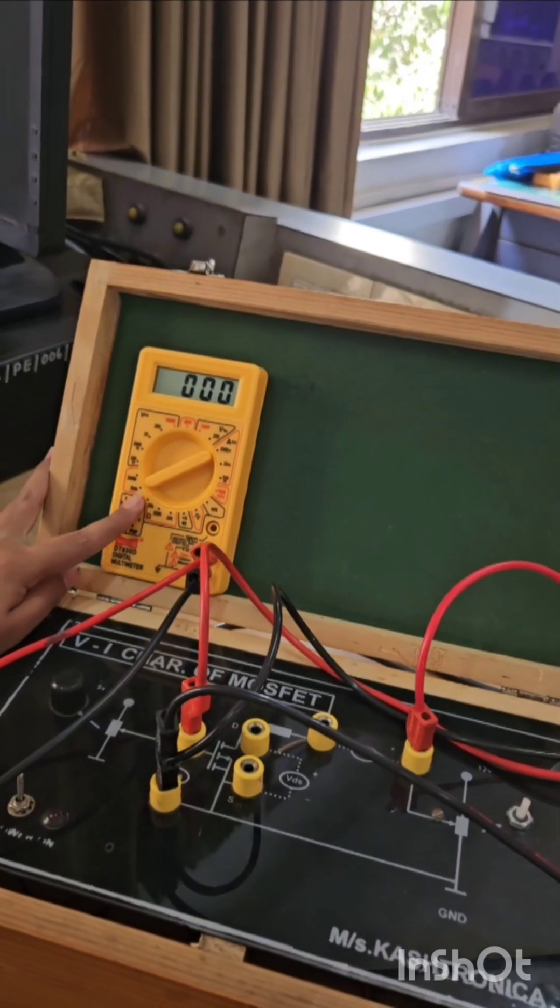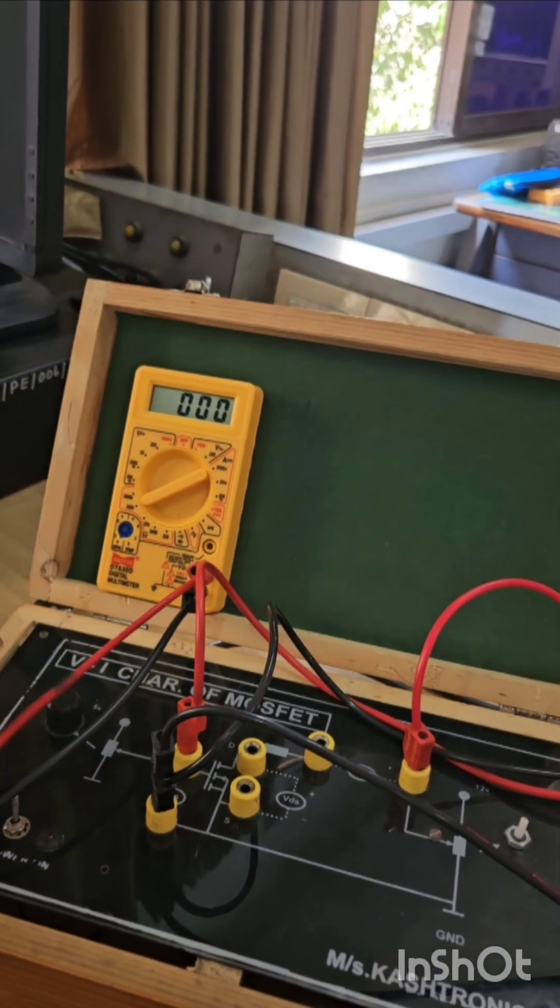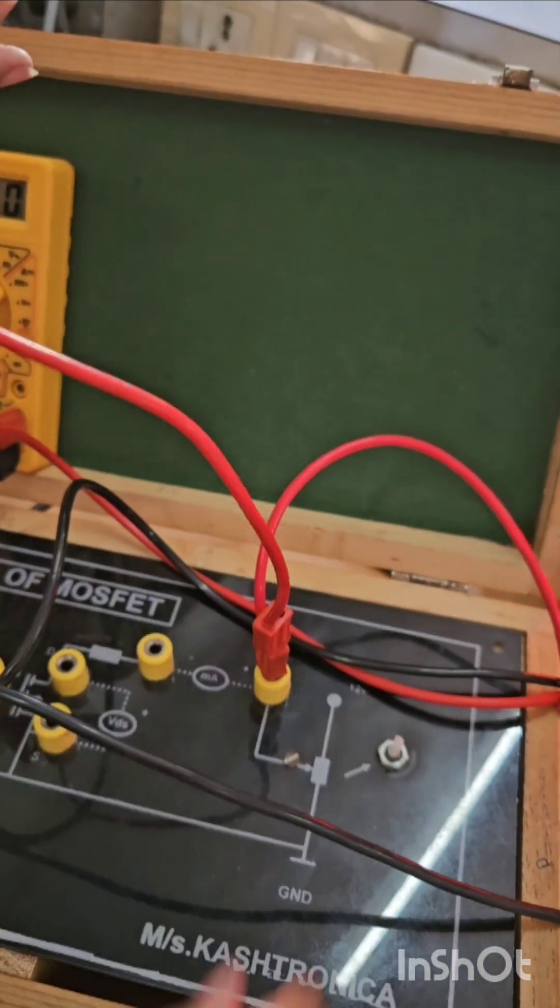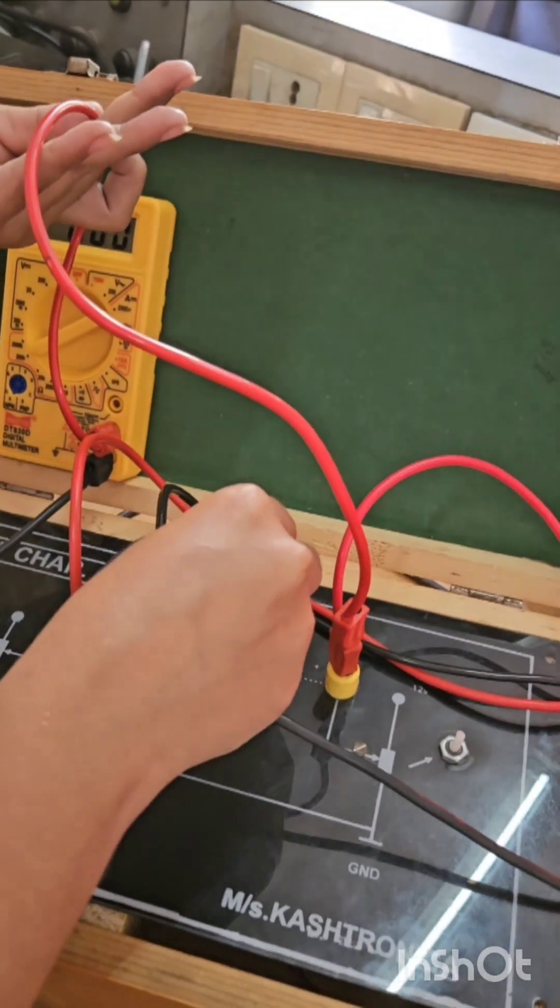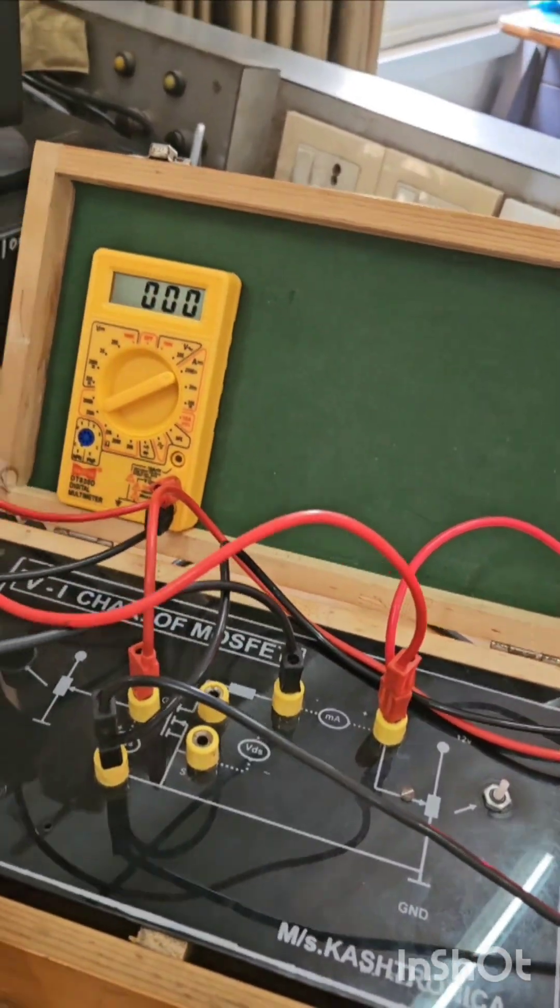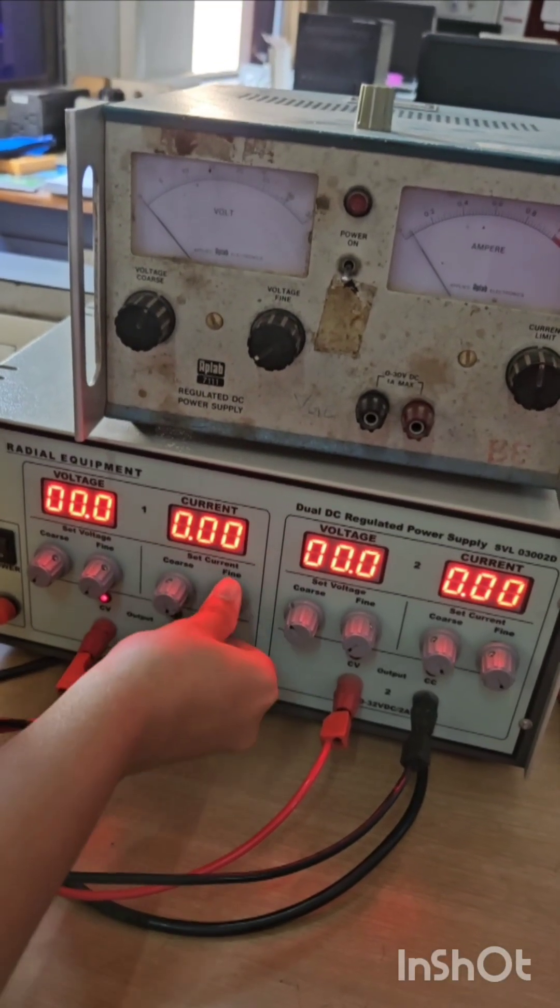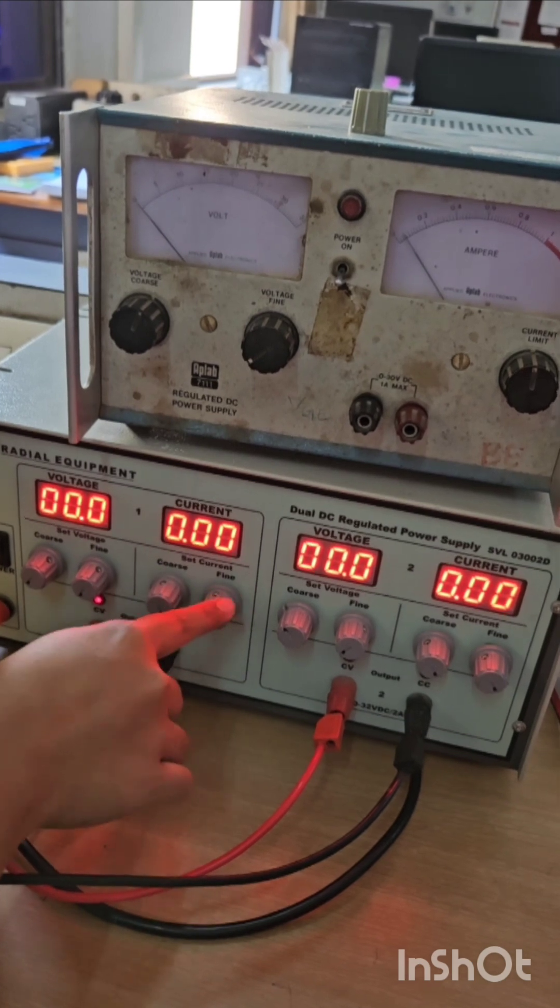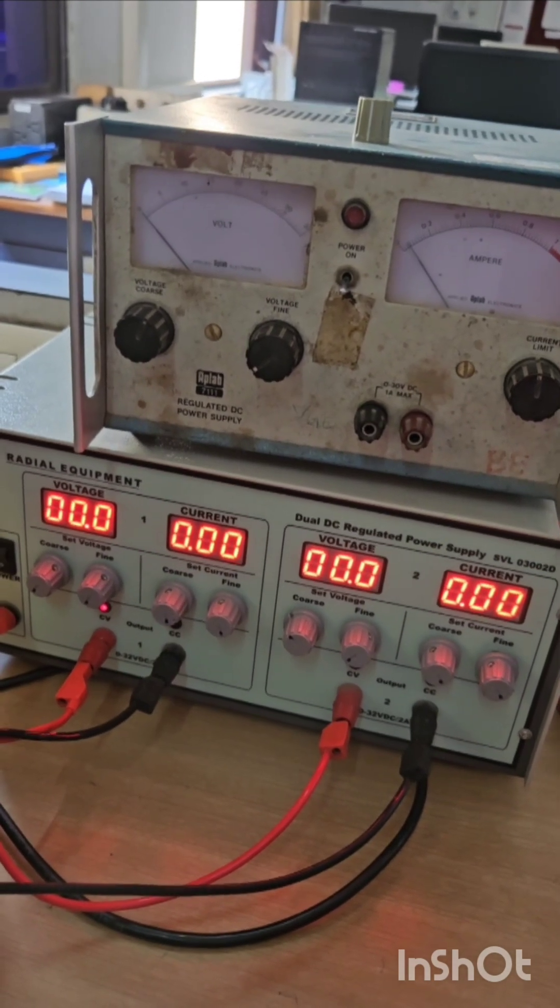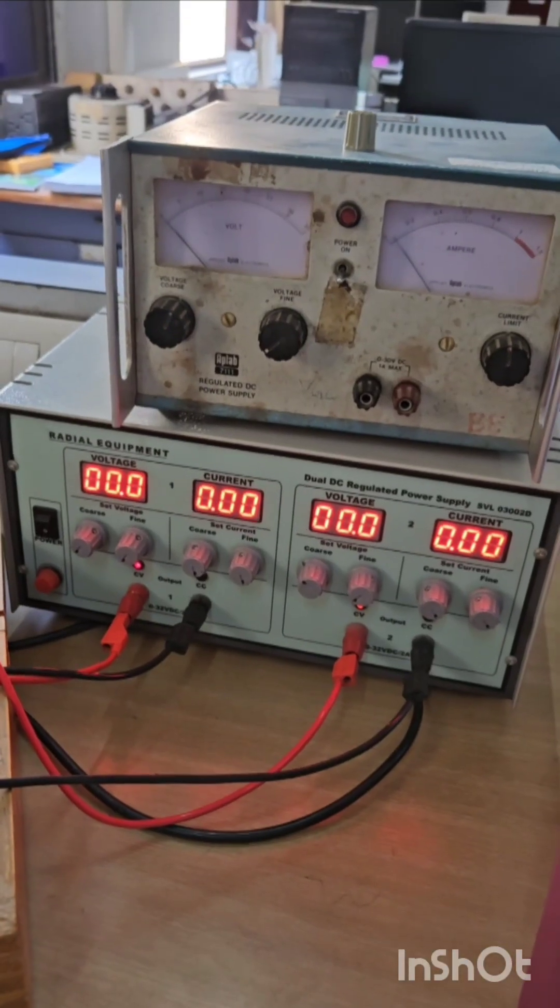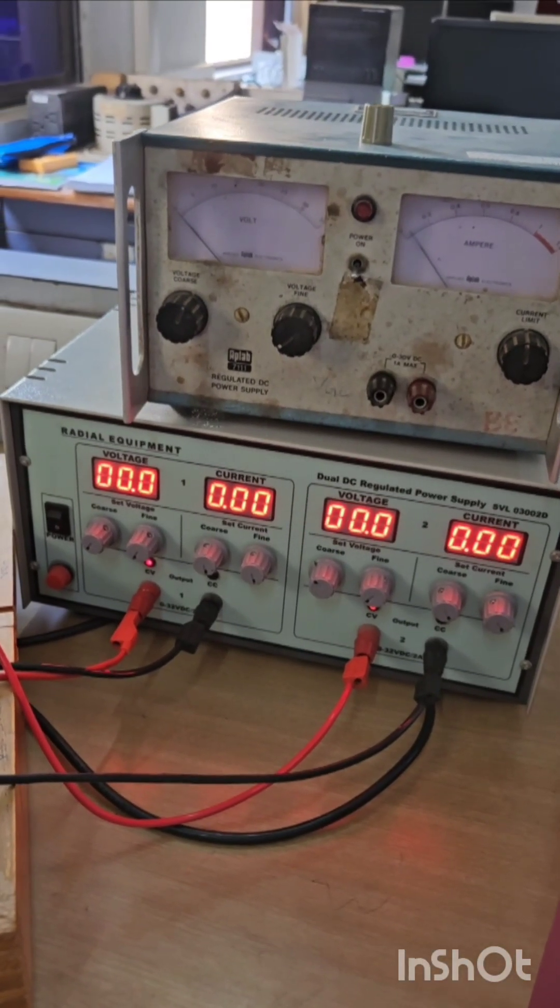Keep the readings at micro and connect this to the positive terminal and this to the negative. Keep the current to minimum, both coarse and fine. Maximum voltage at its minimum value. Keep the gate-source voltage at zero volt.